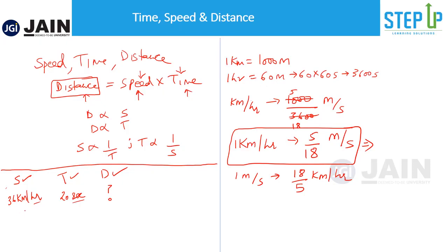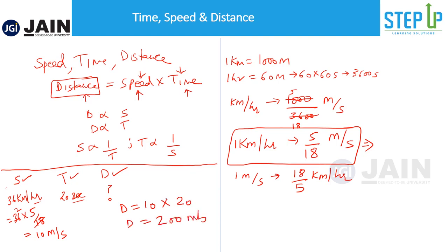Now let's come back to our problem: 36 kilometers per hour. We convert it into meters per second: 36 into 5 by 18, which equals 18 into 2, giving us 10 meters per second. Distance equals speed into time: speed is 10 meters per second and time is 20 seconds, so distance equals 200. The seconds cancel out, giving 200 meters as the answer.